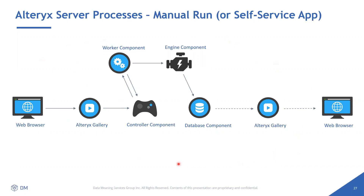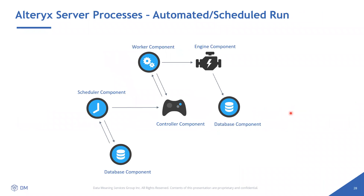You have logs for all of that — access to everything from the log for all communication happening from one component to another. For an automated scheduled run, the scheduler is always monitoring the database (MongoDB), and when it's the right time, the scheduler sends information to the controller to run that job. The controller is aware of all free workers and sends the job to the specific worker, which sends it to the engine. All outputs, logs, who ran the workflow, and the time it takes are all saved.